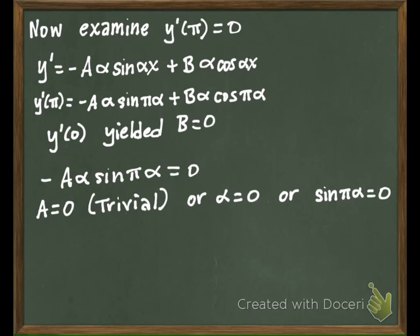And so sine pi alpha will be zero if pi alpha is equal to n times pi, where n is an integer. So alpha equals n.